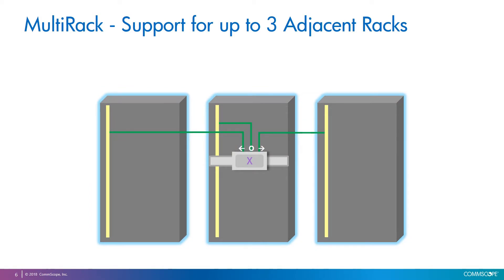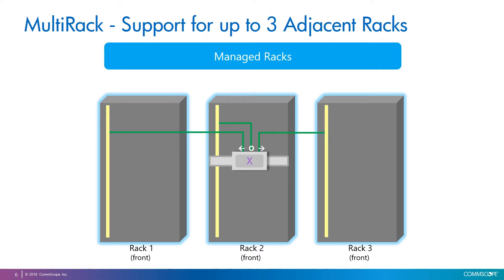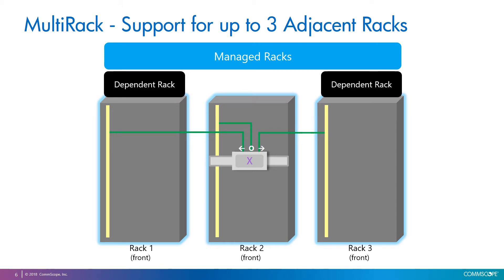This is what we call multi-rack mode or configuration. In this drawing we have three adjacent racks and one InVision Controller X mounted in the middle one. We are looking at the racks from the front. The three racks are what we call managed racks — these racks can have intelligent eyepatch panels and shelves. The racks on the left and right are also called dependent racks, meaning these managed racks do not have an InVision manager of their own. Instead, they are managed from a Controller X that is mounted on a different rack. The rack in the middle is also a managed rack, and in this case we call it a controller rack, meaning the intelligence comes from an InVision Manager mounted on this rack.